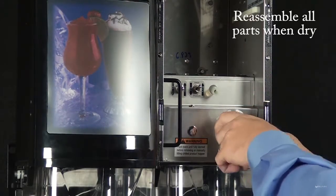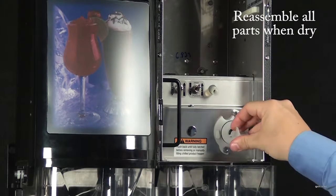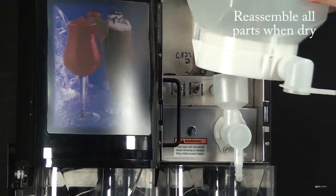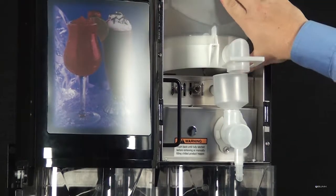When reassembling the parts, be sure to align the arrow on the frother disc with the flat on the whipper motor shaft, and rotate the tab on the whipper base clockwise to the vertical position to lock the mixing chamber.